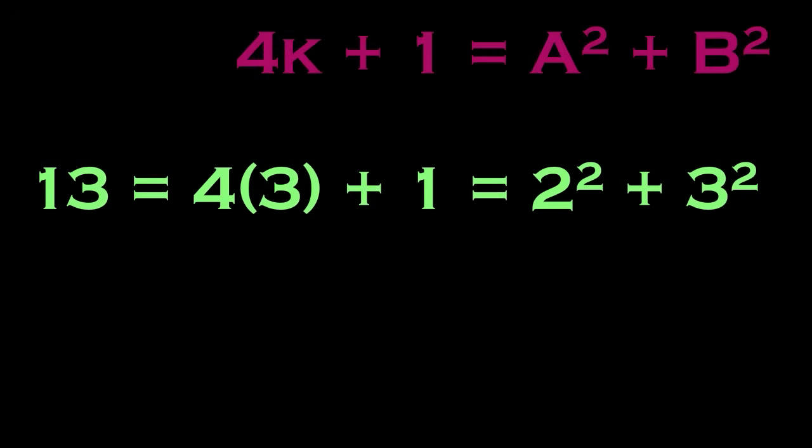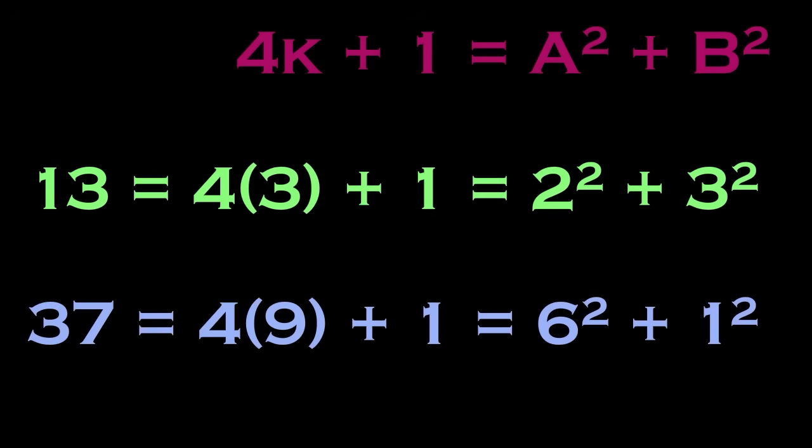For example, 13 can be written as 4 times 3 plus 1, and you can represent 13 as 2 squared plus 3 squared. Likewise, 37 can be written as 4 times 9 plus 1, and you can represent 37 as 6 squared plus 1 squared.